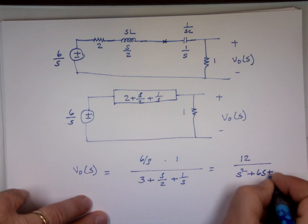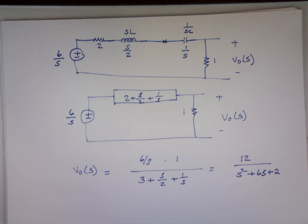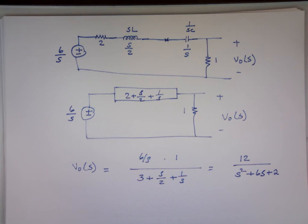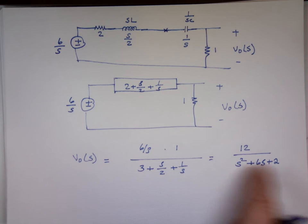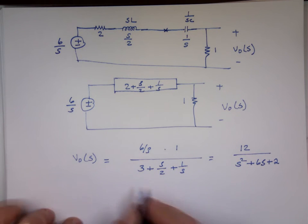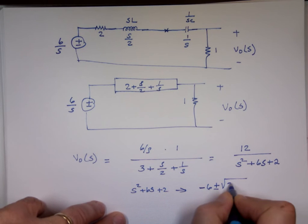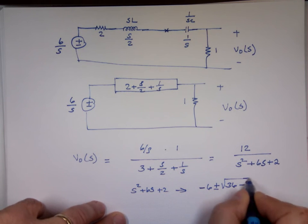Let me verify: multiply top and bottom by 2s to get rid of the fractions. 6 over s times 2s is 12. s over 2 times 2s, 3 times 2s, 1 over s times 2s. Okay. If I use the quadratic equation to solve that one, the roots are real. So let's see, s² plus 6s plus 2. I can see the roots are real: negative 6 plus or minus the square root of 36 minus 4 times 2, which is 8, divided by 2.